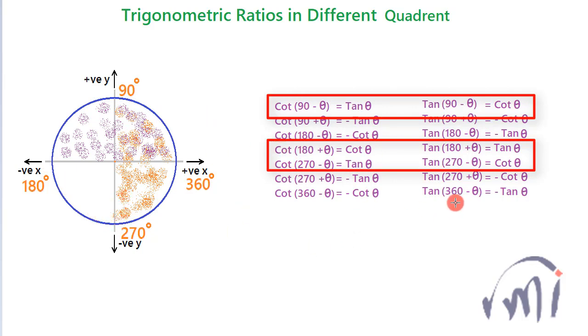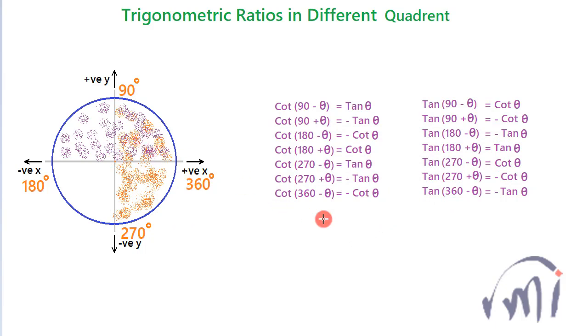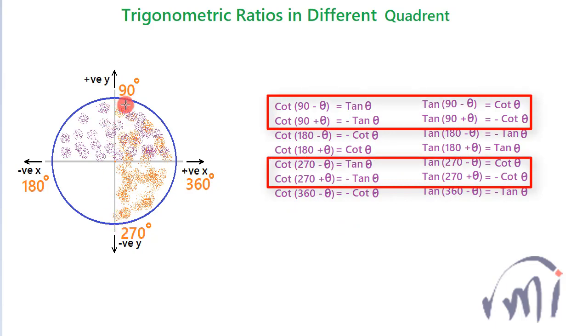And if the angle is measured with respect to the y-axis, that is 90 - θ, 90 + θ, or 270 - θ and 270 + θ, the cot gets converted into tan and tan gets converted into cot.